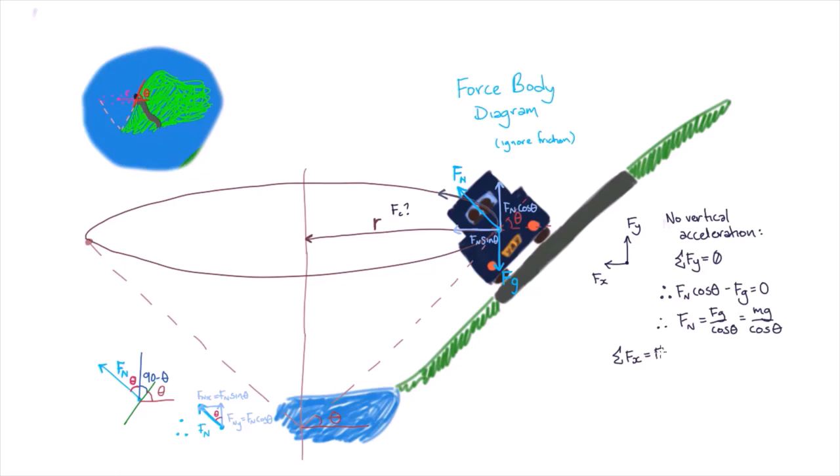Now let's look at the horizontal components. We know, as the car is undergoing uniform circular motion, that the centripetal force is equal to the horizontal component of the normal force. Calculating, we find that the centripetal force is equal to mg sine theta divided by cos theta, which is equal to mg times tan of theta.